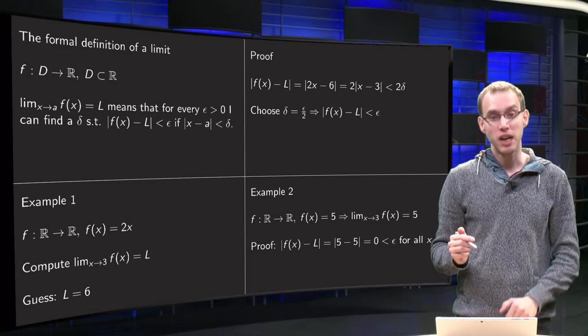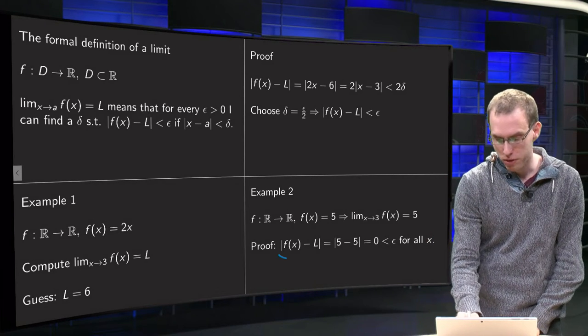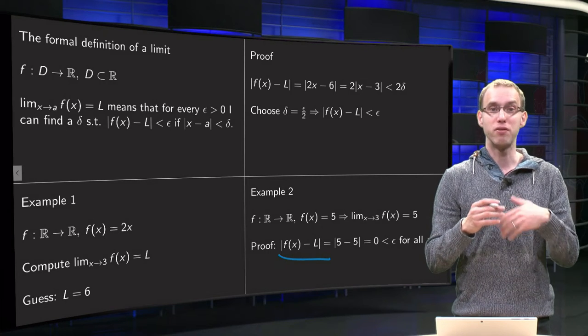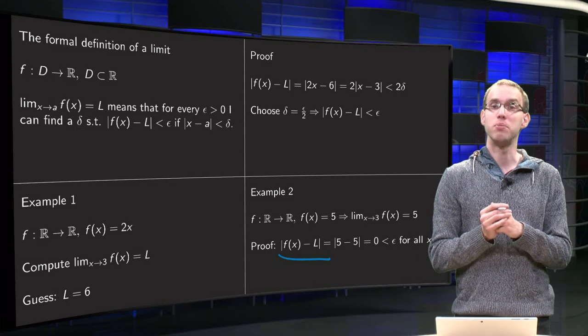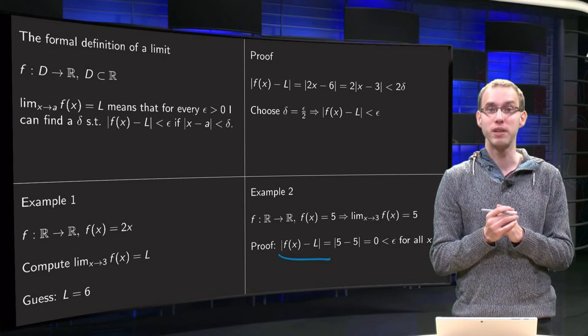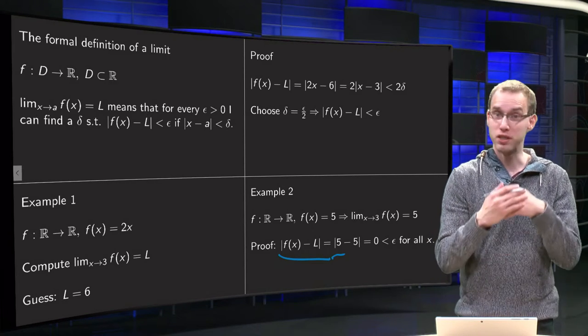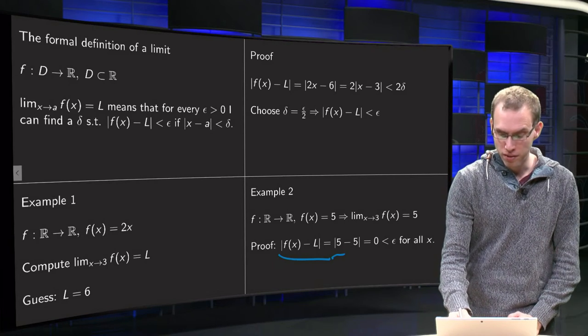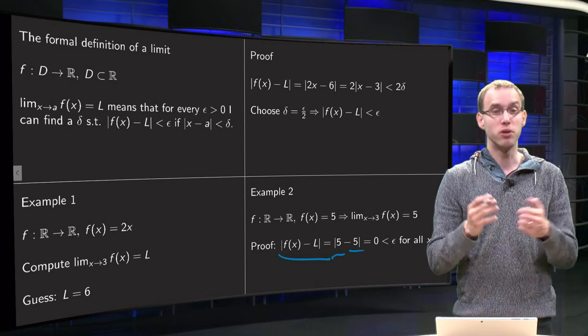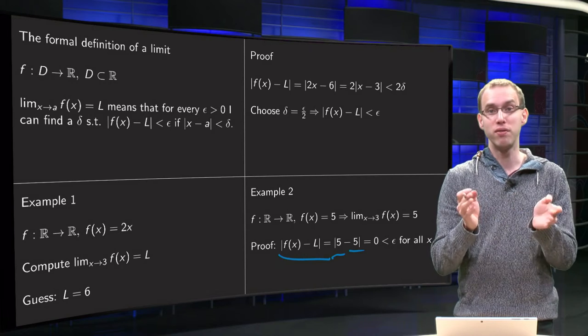And what's the proof now? Again, you use the same setup, you look at the absolute value of |f(x) - L|, and you have to be able to get it smaller than any epsilon by choosing your delta appropriately. Well, f(x) equals 5, because f(x) is 5 everywhere. Your limit is also equals 5, so 5 minus 5 equals 0.